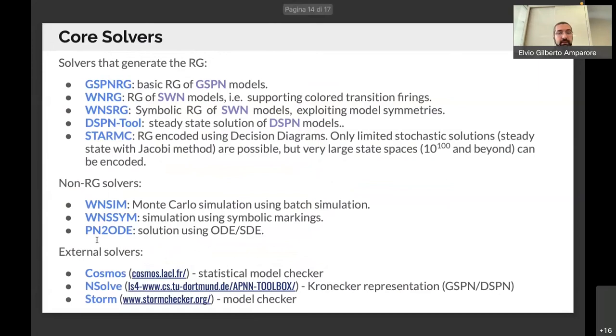This is a list of the solvers that the GreatSPN framework has. In particular, we have the solvers that generate the reachability graph, and there are different solvers for GSPN, SWN, and DSPN models. Then there is the model checker using decision diagrams. Then there are also the non-reachability graph-based solvers, in particular which are based on either Monte Carlo simulation using